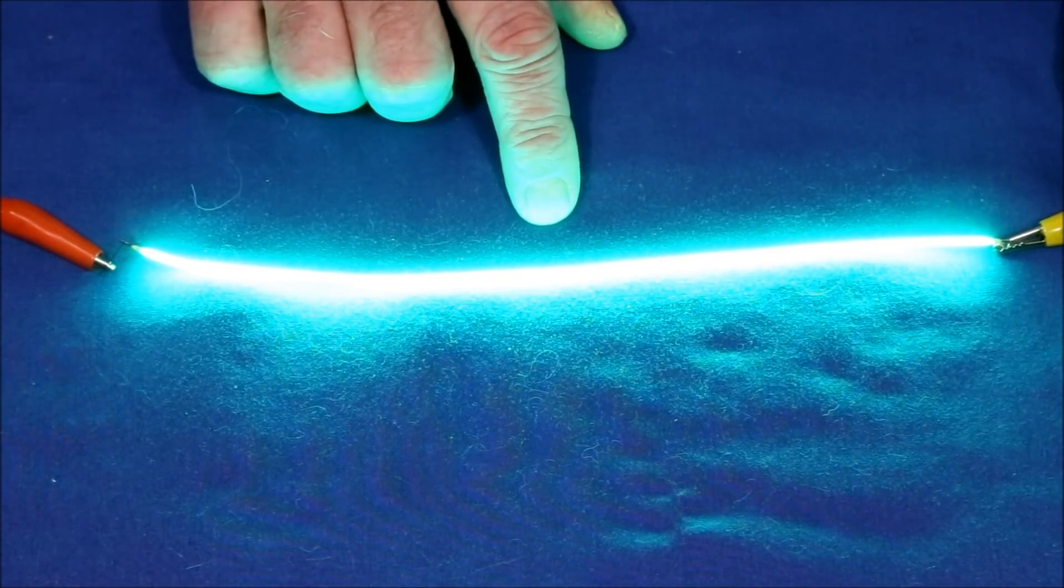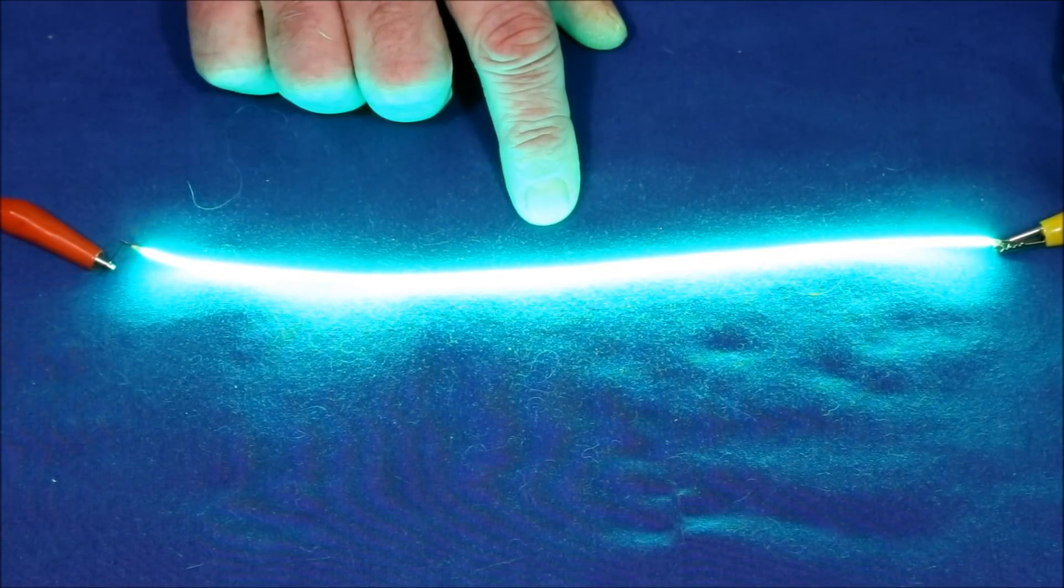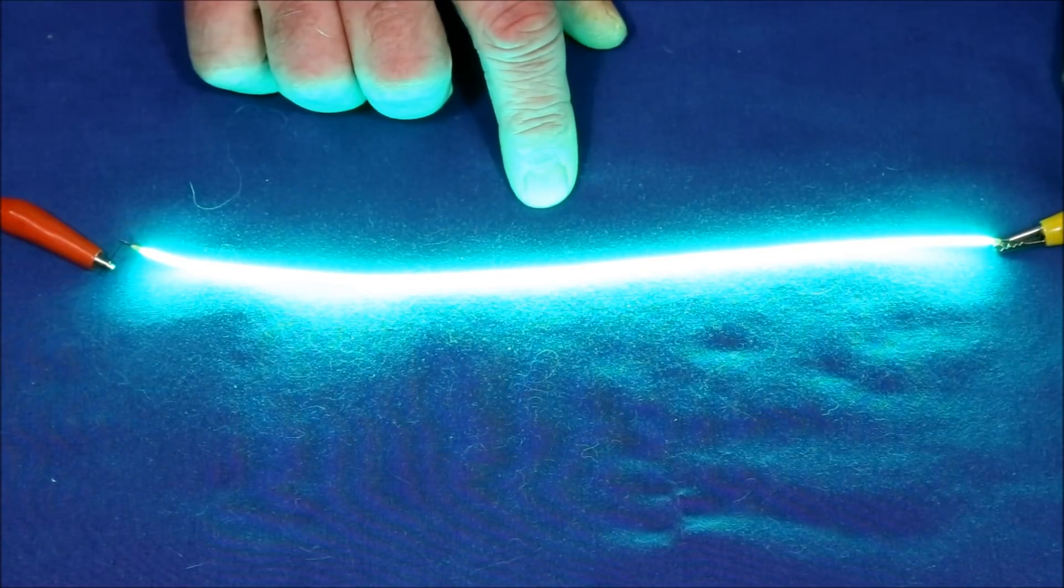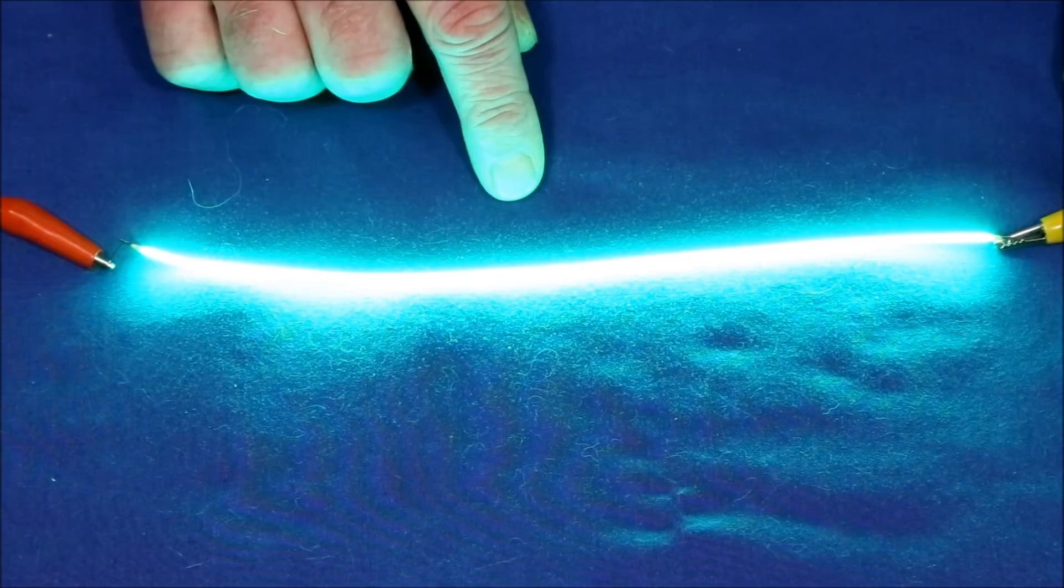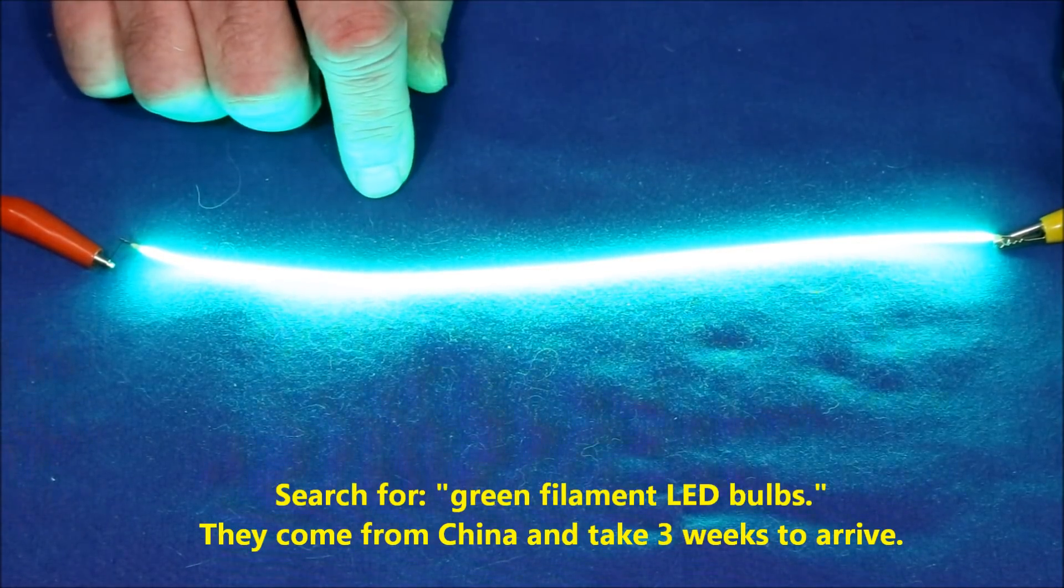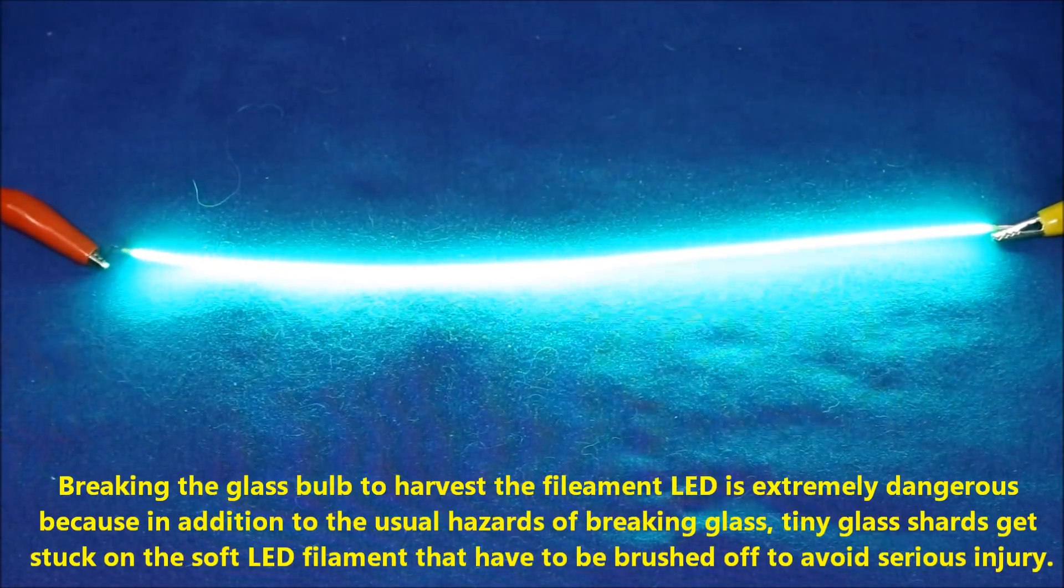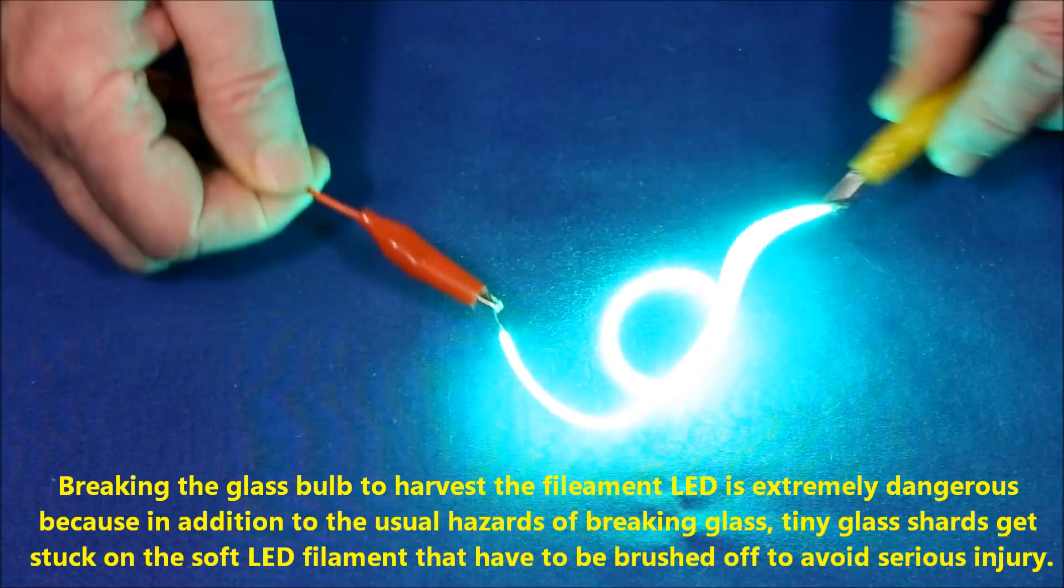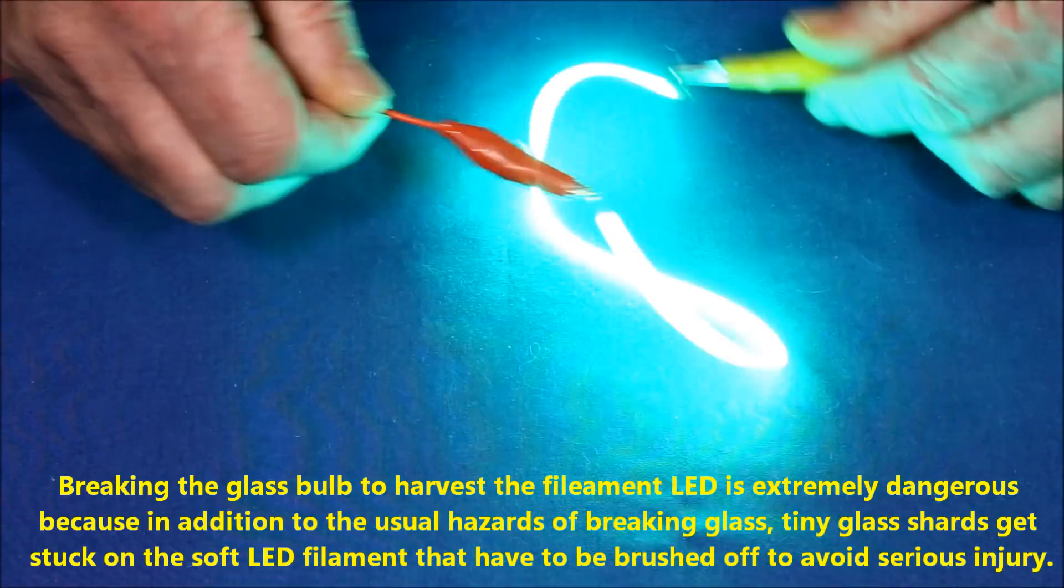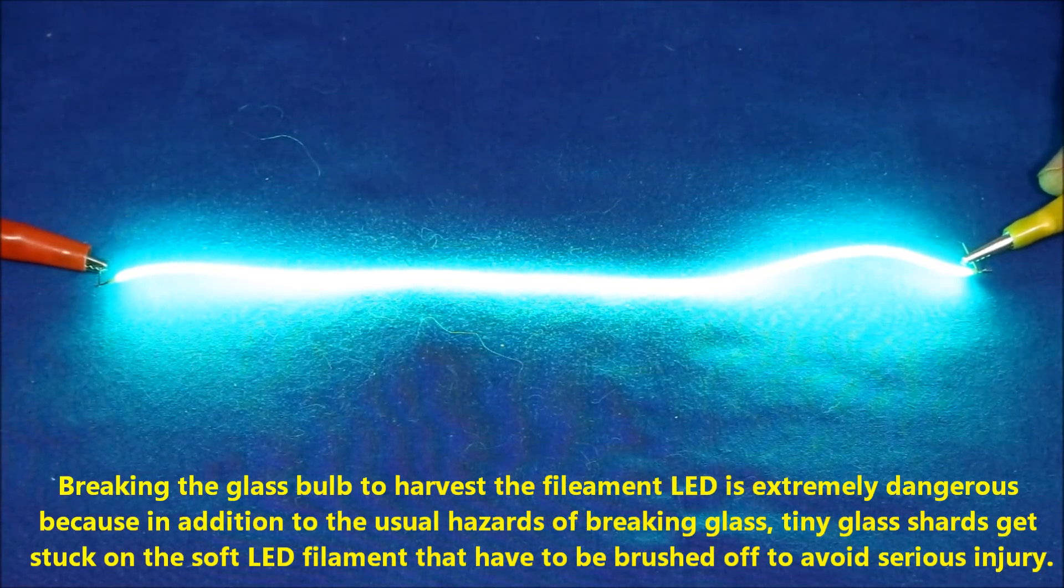Now you can get these in a wide range of colors all the way from red to violet. The problem is, though, these aren't available yet as far as I can find anywhere as components, which means you're going to have to harvest them from light bulbs. And the light bulbs run about seven and a half, eight dollars a piece. But even though it's lit up, they're fun to play with. You can see you can bend the element in any way you want to create whatever effect you want. They're really neat.